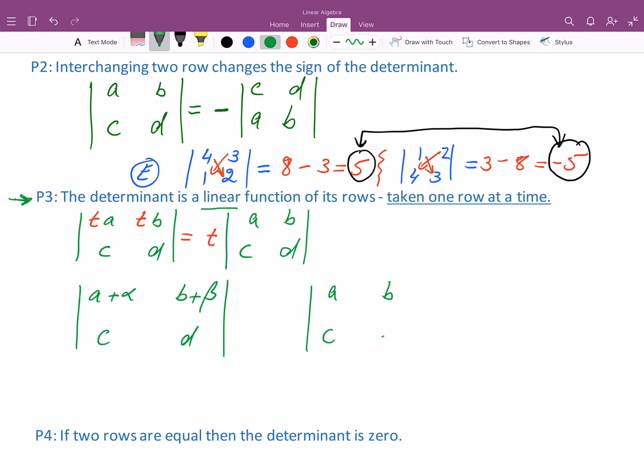I have the determinant A, B, C, D, and the determinant alpha, beta, C, D. So the second row is being unchanged. We're going to do this taking one row at a time. And so the linearity property of determinants says that this is equal to the sum of these two determinants. And so these two properties together give us linearity.